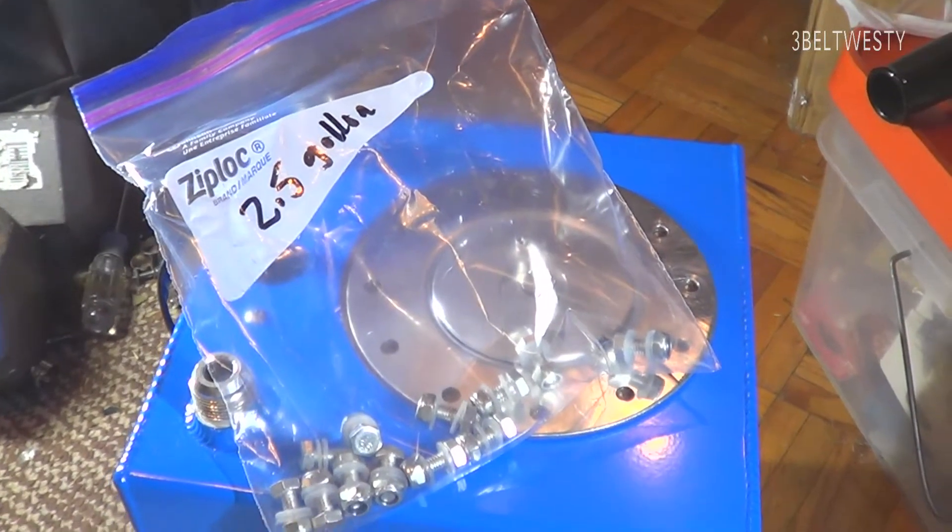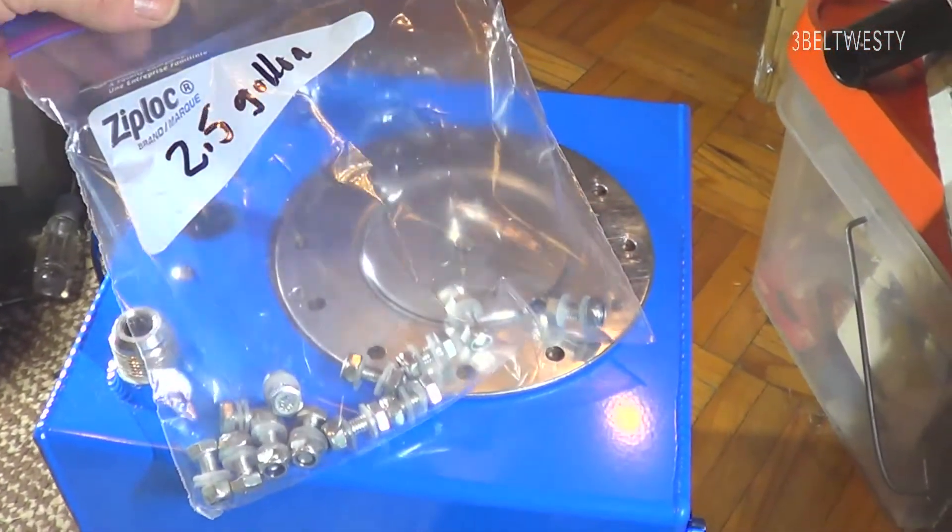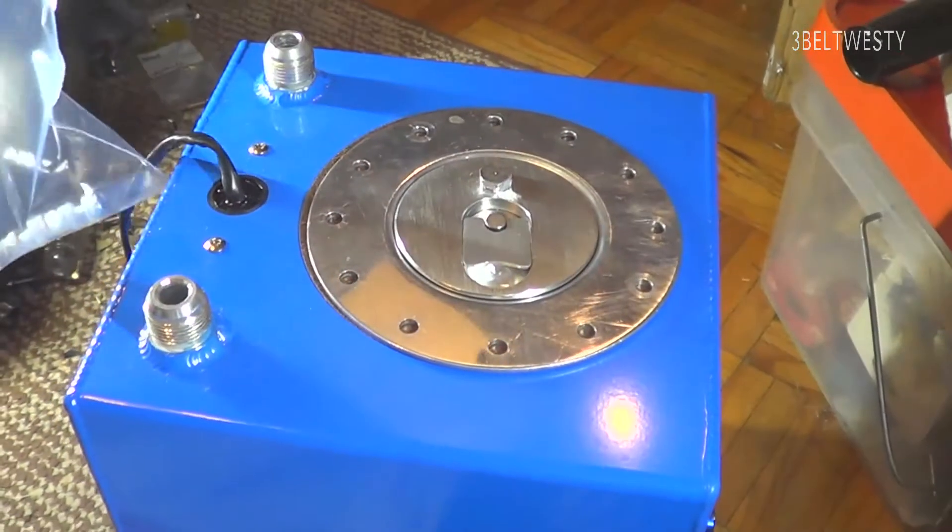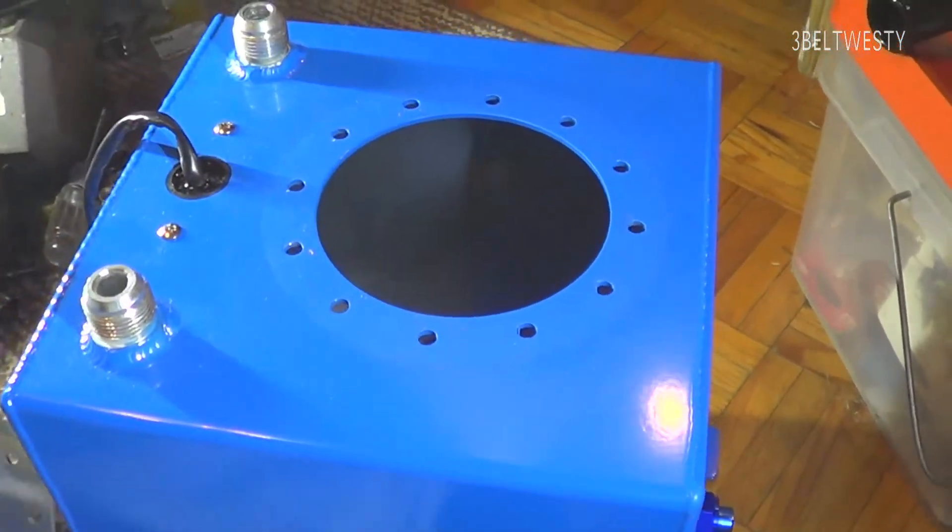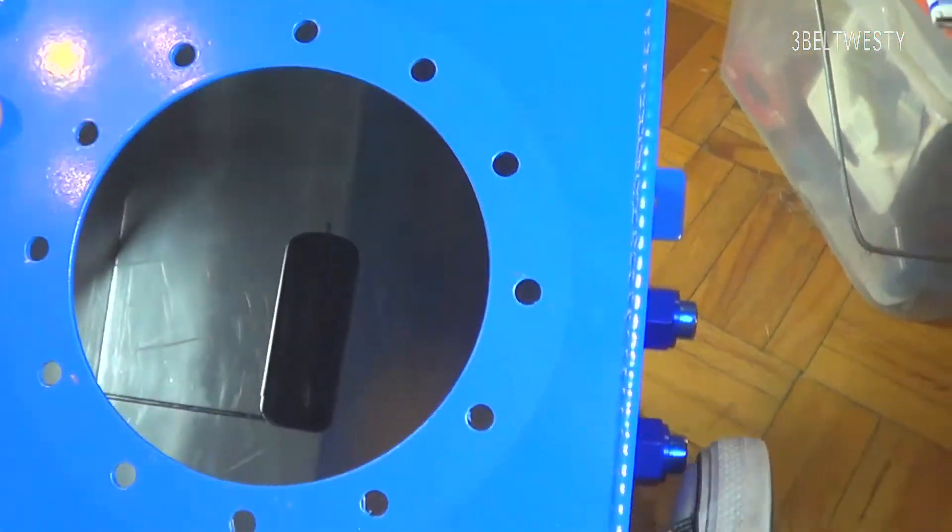This is a two-and-a-half gallon fuel cell. I want to show the float on there, what its range is. I've undone this just to make it a little bit easier to show what's going on.